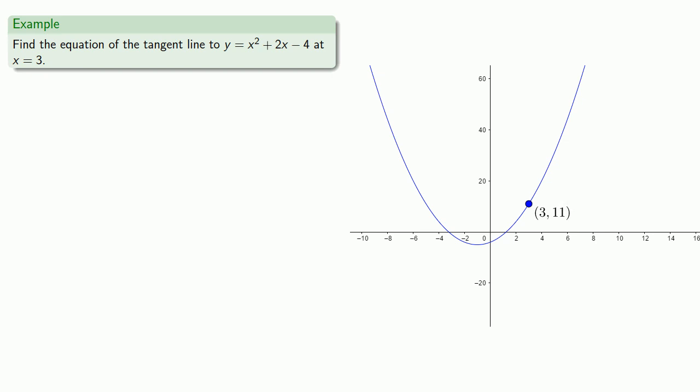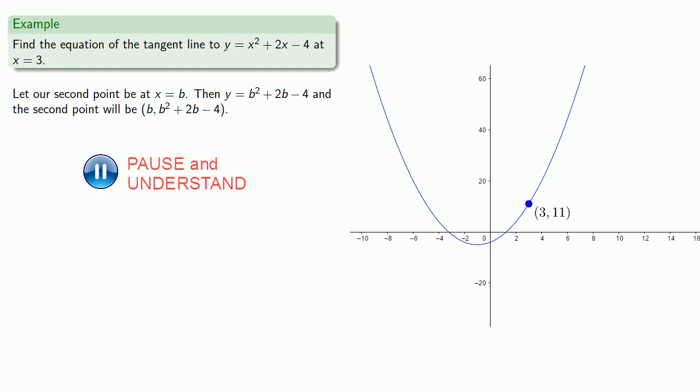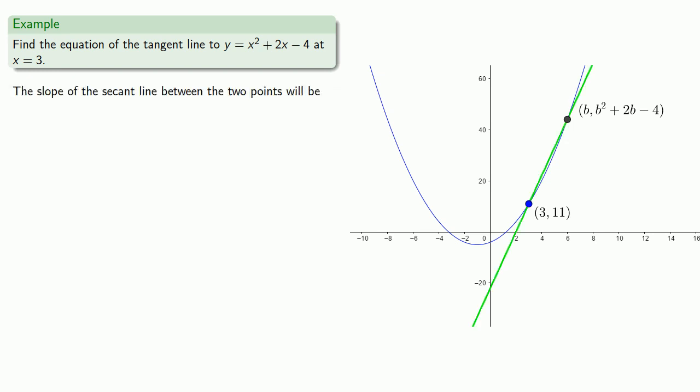Let our second point be at x = b. Then y = b² + 2b - 4, and the second point's coordinates will be (b, b² + 2b - 4). And that gives us a secant line. Now we have two points, and we can compute the slope of the secant line between the two points.